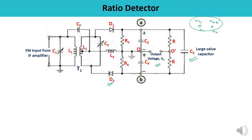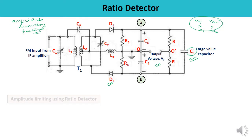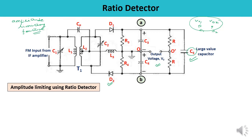You can explain the ratio detector by taking three conditions: when Fn equals Fc, when Fn is between Fc and Fc plus delta F, and a third condition. Accordingly, you can draw the S-shaped curve, which is also the same as in the phase discriminator. However, the additional feature of the ratio detector is amplitude limiting action, which is incorporated because of the large-value capacitor C5. Due to this, an additional amplitude limiter is not required prior to the ratio detector.